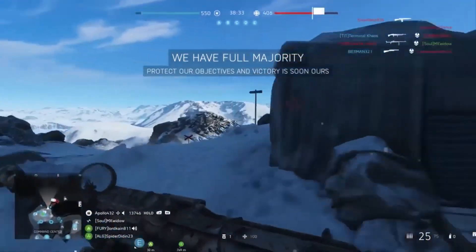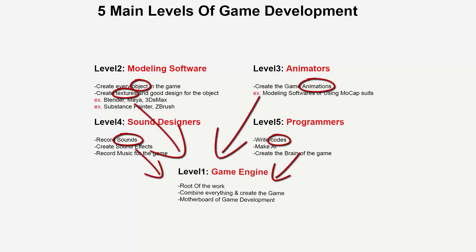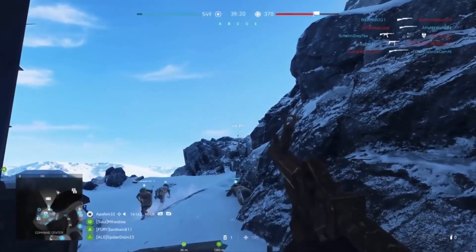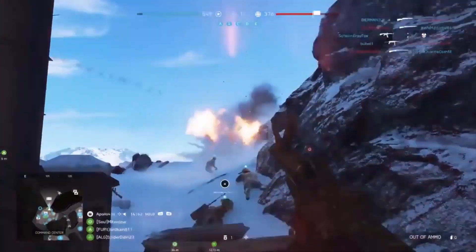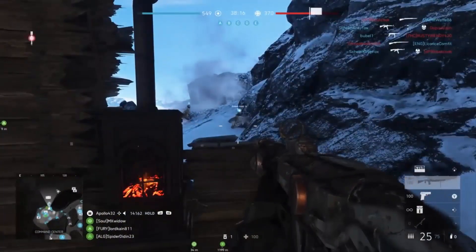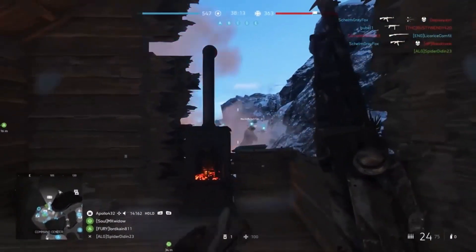Alright, let's get back to the game engines. The game engine takes the models, textures, animations, sounds, and code and combines them all to work together and produce the game. There are a lot of good game engines out there and most companies create their own game engines for their own games.